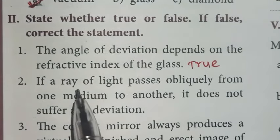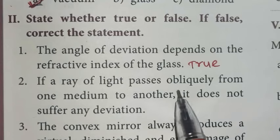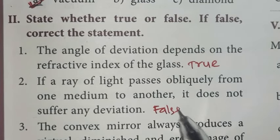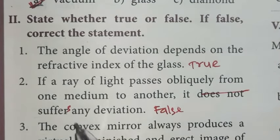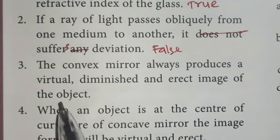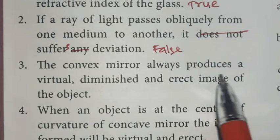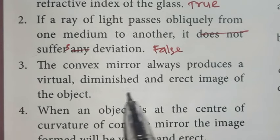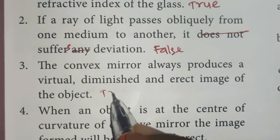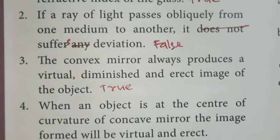Second one, if a ray of light passes obliquely from one medium to another, it does not suffer any deviation. False. It suffers deviation. Third one, the convex mirror always produces a virtual, diminished, and erect image of the object. Yes, this is true.